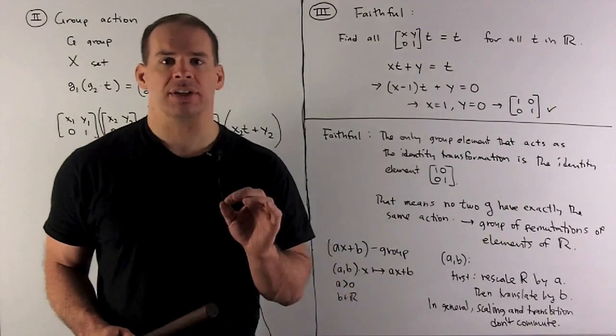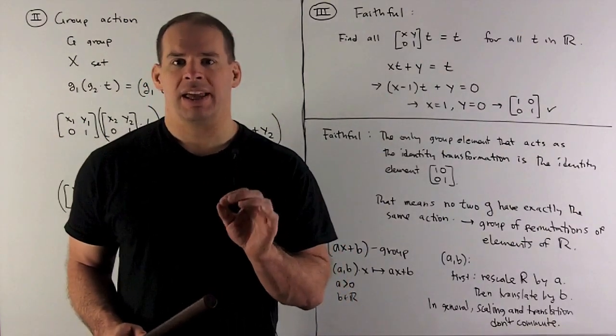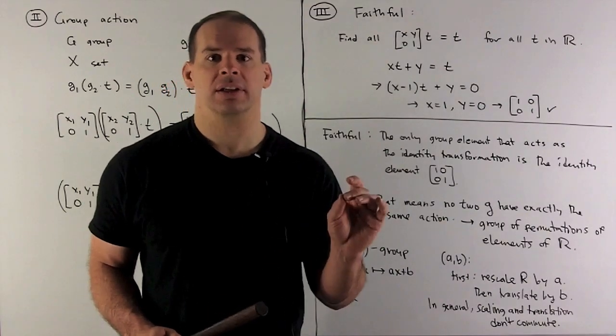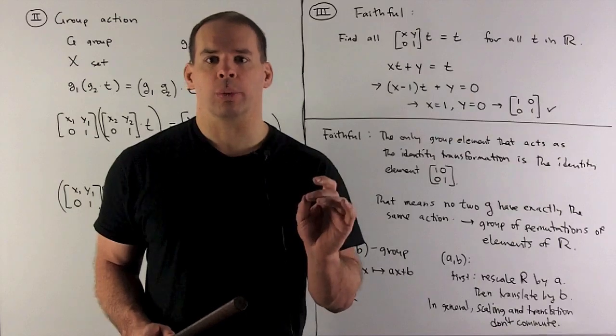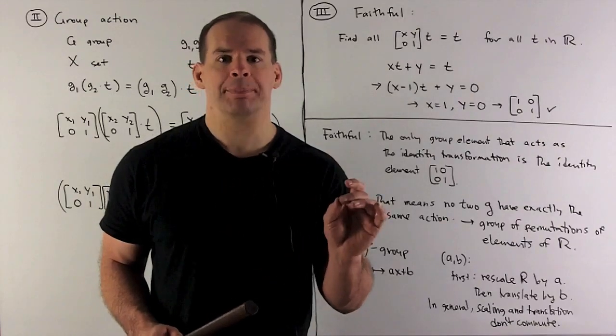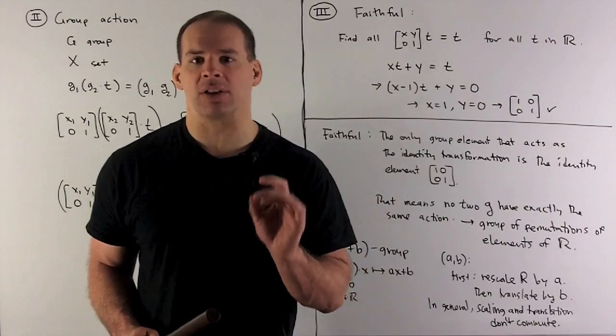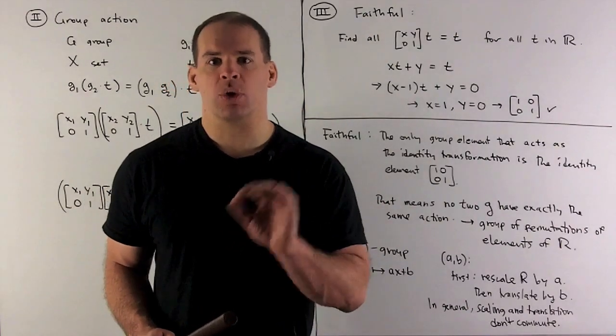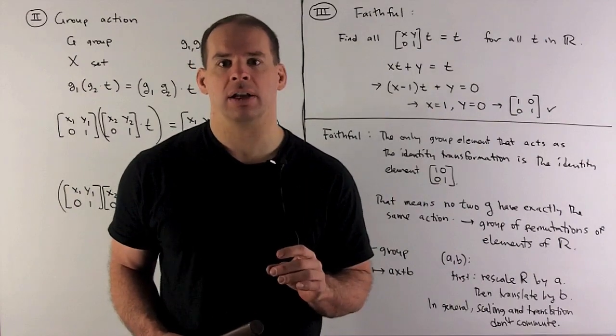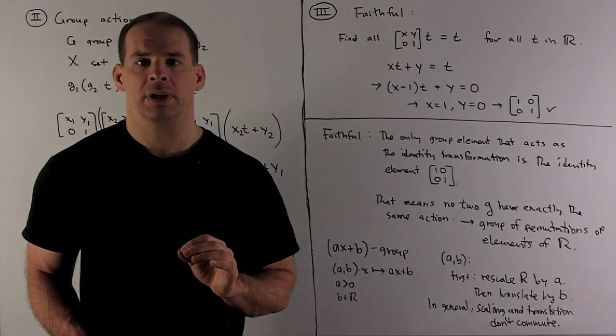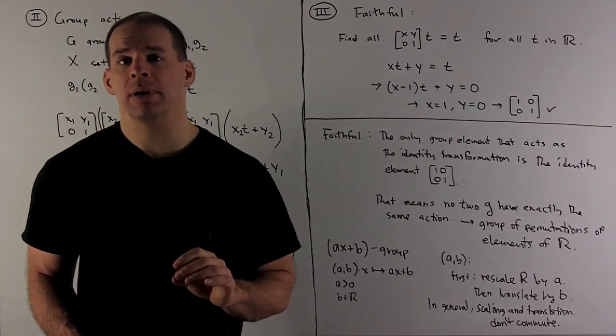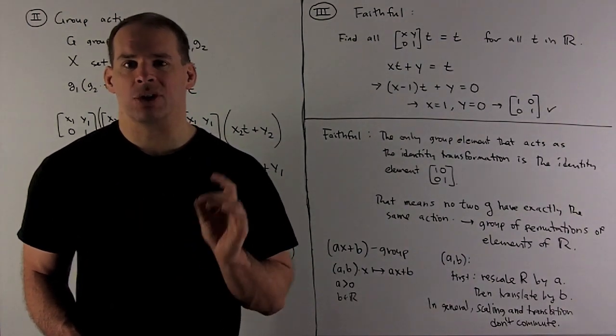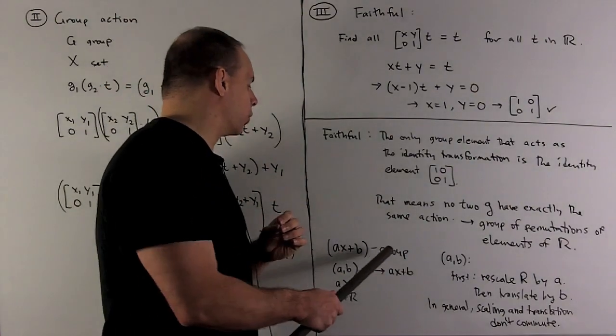Now, what does faithful get us? That means if I take any two distinct group elements, the transformations that come out are also distinct. So if I leave the room, you pick a group element, apply it to the real line. When I come back in, I can tell you exactly which group element you used. That's going to mean a group is a genuine group of permutations on the real line.